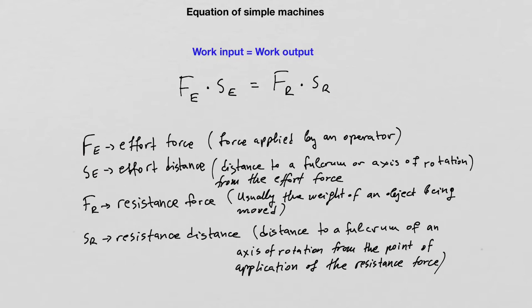Where FE stands for effort force — that is the force applied on the simple machine by an operator. SE is the effort distance — that is the distance to a fulcrum or axis of rotation from the point where the effort force was applied. FR is the resistance force, which is usually the weight of an object being moved, for example, lowered or lifted above ground. And SR is the resistance distance — the distance to a fulcrum or axis of rotation from the point of application of the resistance force.